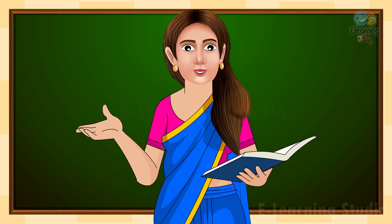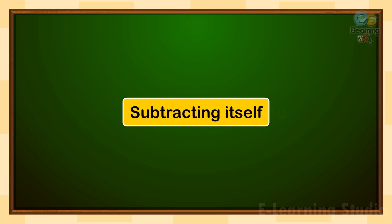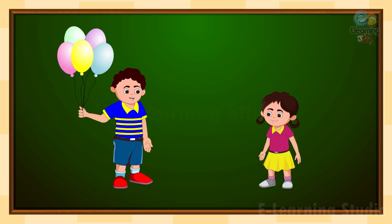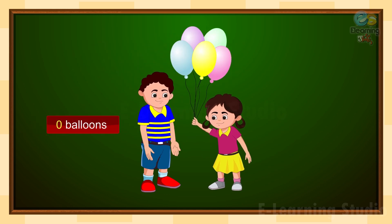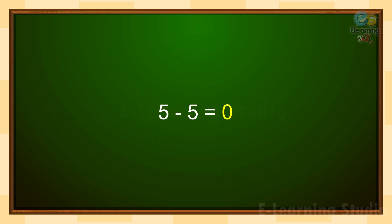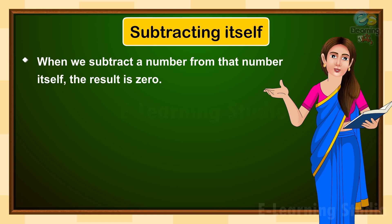Now let's move to our next property, which is subtracting itself. On screen you can see a boy who has five balloons, but he wants to give all five balloons to his sister. So he will be left with zero balloons. He gave all the balloons to his sister — here we subtract all balloons.